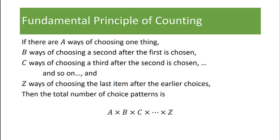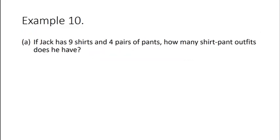Let's do some examples. If Jack has nine shirts and four pairs of pants, how many shirt-pant outfits does he have? He has nine shirts and four pairs of pants. So nine times four tells us he has 36 total outfit choices.